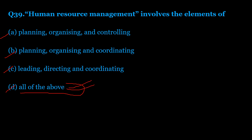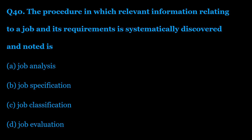Question number 40: The procedure in which relevant information relating to a job and its requirements is systematically discovered and noted is — Option A: job analysis. Option B: job specification. Option C: job classification. Option D: job evaluation. The correct answer is Option A — job analysis.